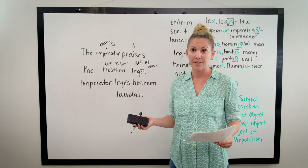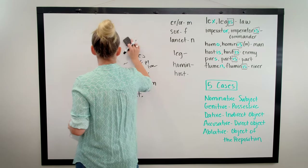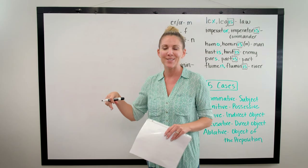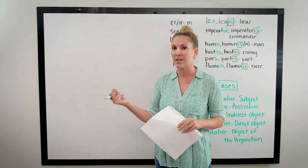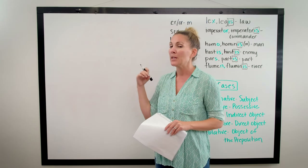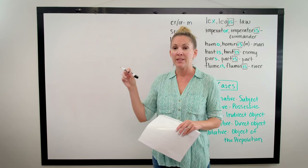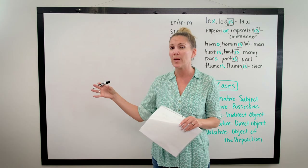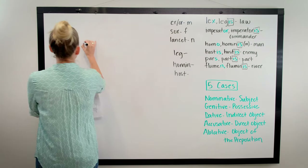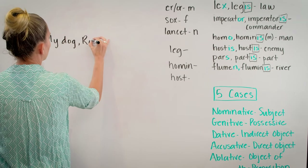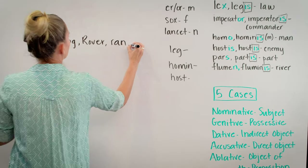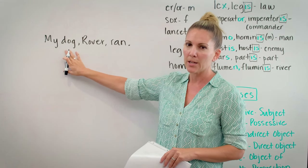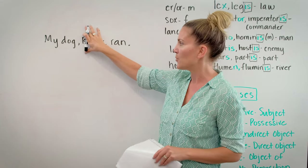Let's talk about appositives. If you don't have the printout of the nine different roles nouns can play in a sentence, I'll put the link in the description. An appositive is a noun that is directly beside or closely follows another noun or pronoun that further describes or identifies it.